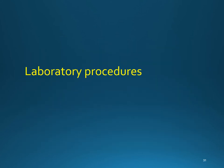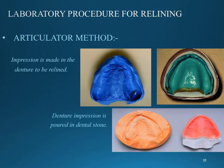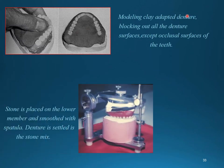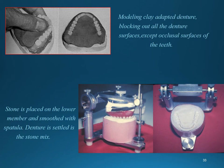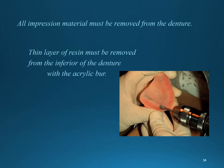Coming to the lab procedures — the articulator method: an impression is made in the denture to be relined and poured in dental stone. Modeling clay is then adapted to block out the denture undercuts everywhere except the teeth. Stone is placed on the lower member of the articulator and smoothed with a spatula. The dentures are settled in the stone mix. All impression materials must be removed from the denture.